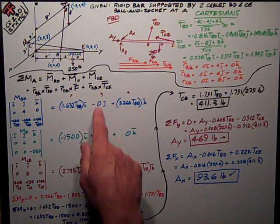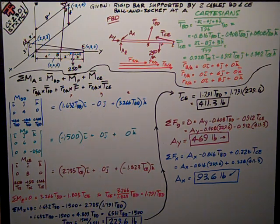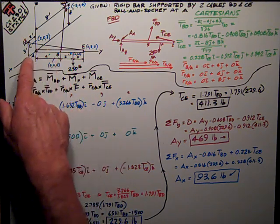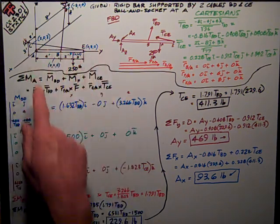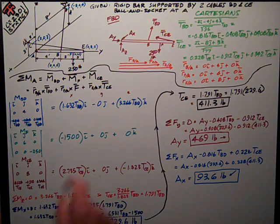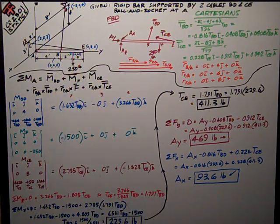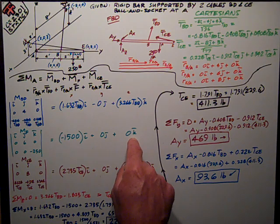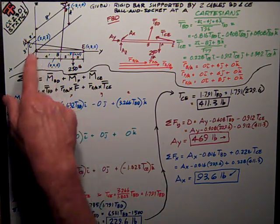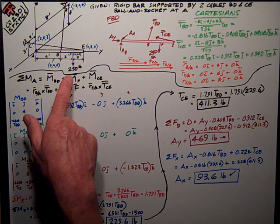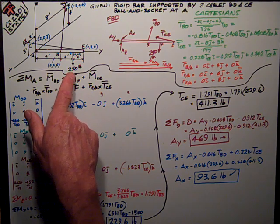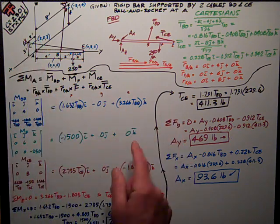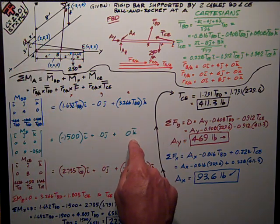I'm noticing that I've got 0 in the Y column. Why is that? Well, that's because all forces pass through the Y axis, so they create no moment about the Y axis. I've also got a 0 out here in the K column for the force itself. Why is that? Well, it's because I've got a 250-pound force in the K direction, or negative Z direction, and it's parallel to the Z axis, so that creates no moment. So that explains that 0.